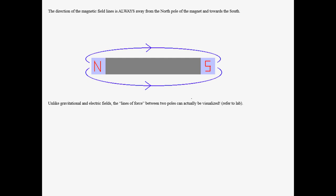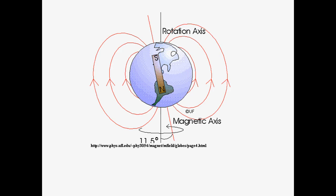I showed you what the field lines look like for gravitational and electric fields; here they are for magnetic fields. The magnetic field direction is always north to south — that's what the arrows show. Looking at Earth, we call this region the North Pole and this the South Pole. When you use a compass, it's the south end of the needle that points toward geographic north, because opposites attract — that's why we call it the North Pole. Looking at the magnetic field lines, they follow the pattern as if there's a big bar magnet in the center of the Earth, going from north to south.